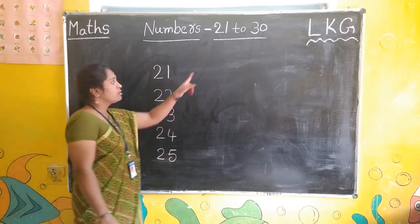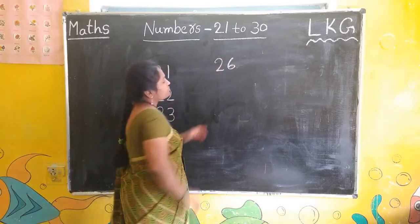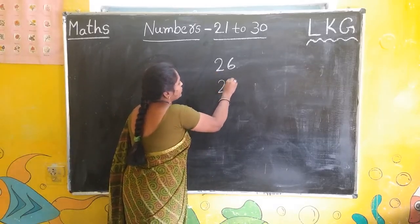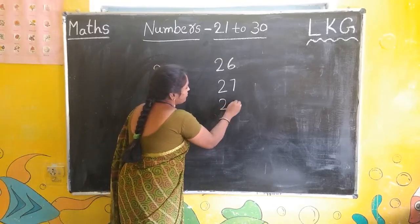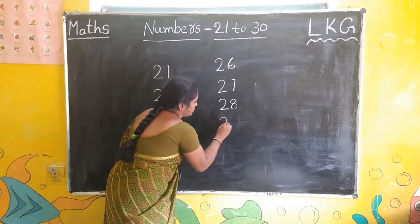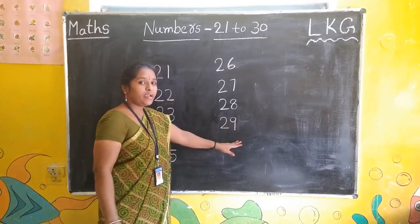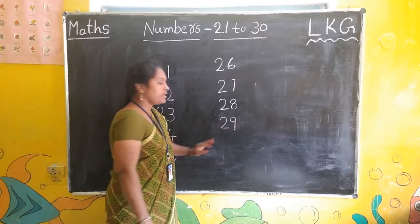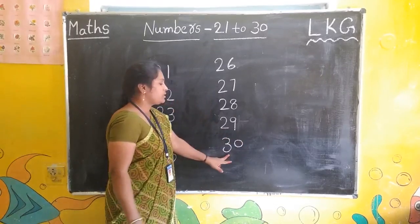After 25 comes 26. Very good. Then 27, 28, 29. After 29 comes 30 — three-zero, 30.